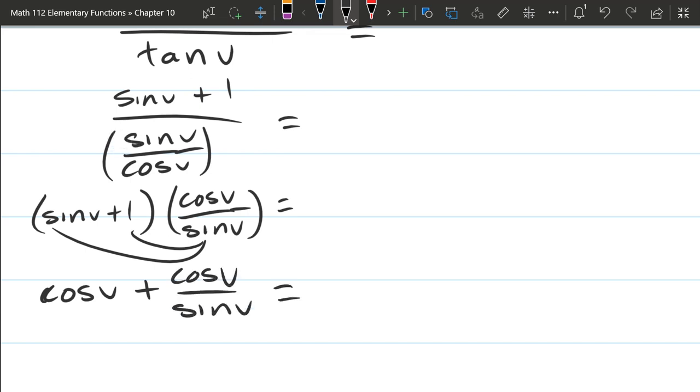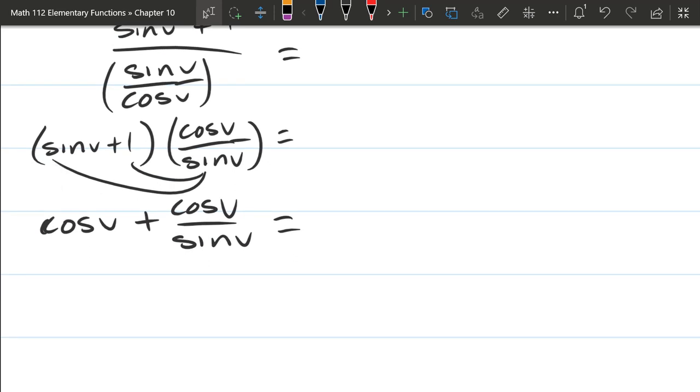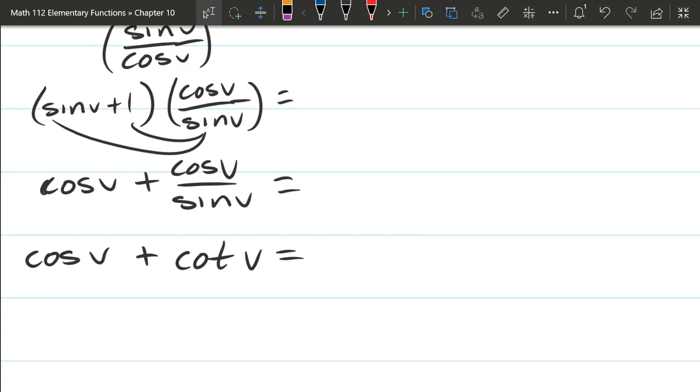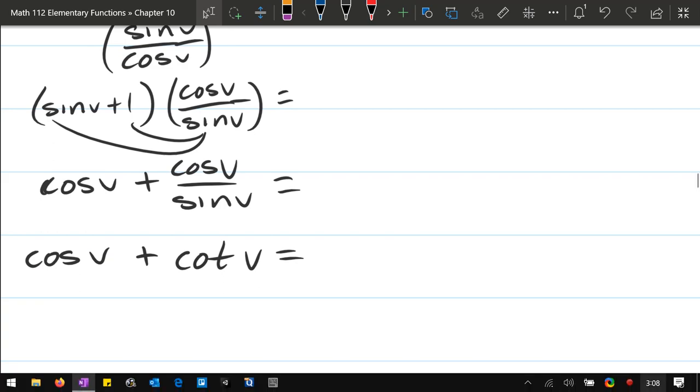And what is cosine v over sine v? I could factor cos v out, but let's just rewrite cos v over sine v as cotangent v. Alright, and that I believe will be as simple as we're going to get this. Okay guys.